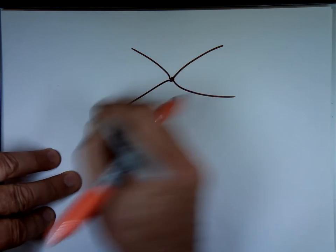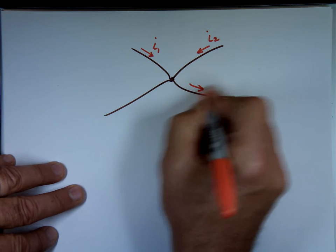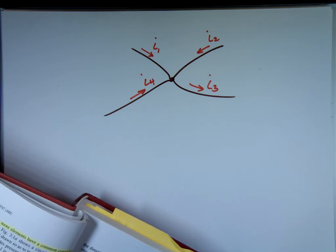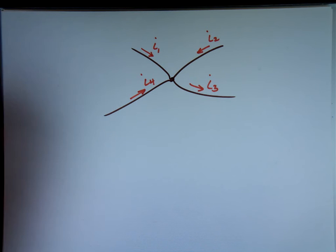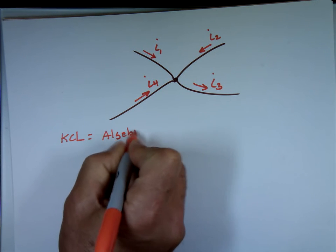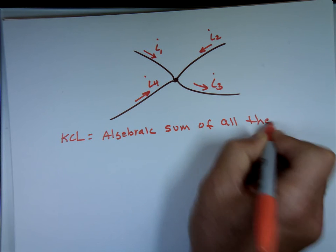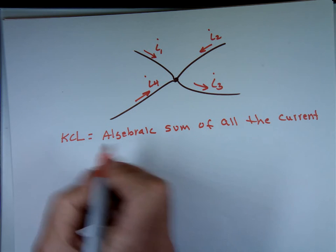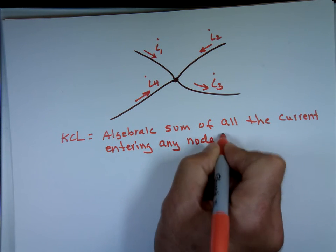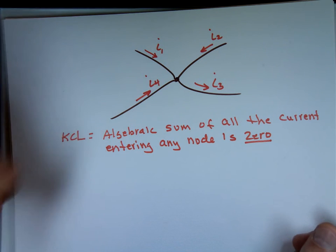Let's look at a node with several branches. We have a current coming in — call it I1. This is I2, this is I3, this is I4. Notice I made I3 leaving. The definition of KCL: the algebraic sum of all the currents entering any node is zero. So let's look at the currents entering the node: we have I1, I2, and I4 going in.